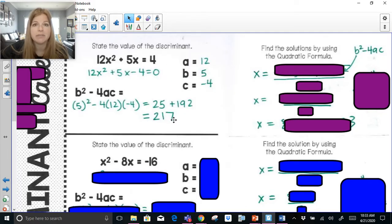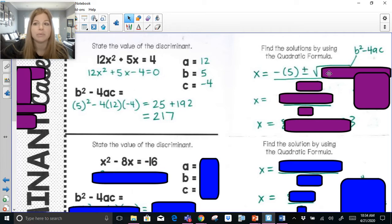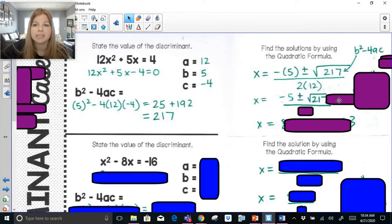Because the discriminant is positive, this equation has two solutions. If I actually asked you to find the solutions, we would use our quadratic formula. So x equals negative b, negative 5, plus or minus the square root. We already did the b squared minus 4ac work, so we can just bring over that 217 all over 2a, 2 times 12. This becomes negative 5 plus or minus the square root of 217 over 24.